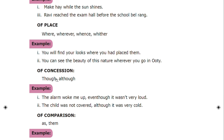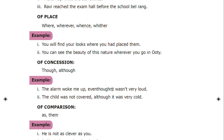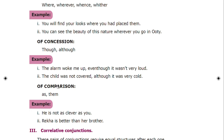Conjunction of concession uses 'though' or 'although' — 'The alarm woke me up even though it wasn't very loud.' Conjunction of comparison uses 'as' — 'He is not as clever as you.' Here two things are being compared using 'as', making it a subordinating conjunction.